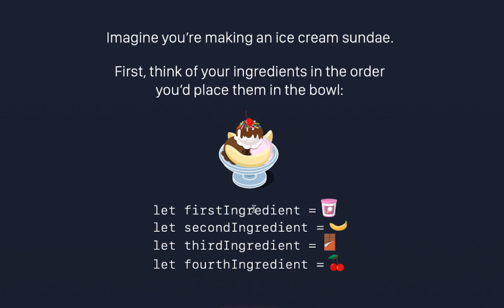I needed the first ingredient to store ice cream, the second ingredient to store banana, the third ingredient to store chocolate, and the fourth ingredient to store strawberry. So you have data on the right-hand side and the constant or variable name on the left-hand side — we need four variables to store four pieces of data.